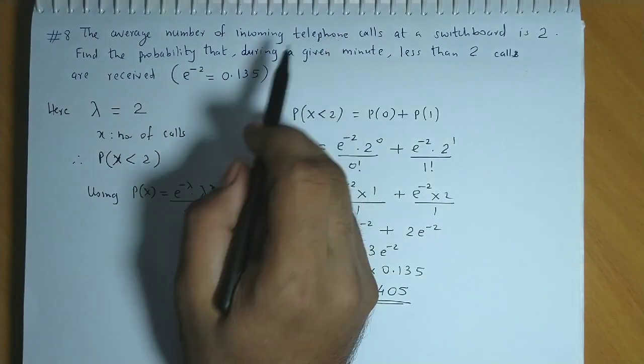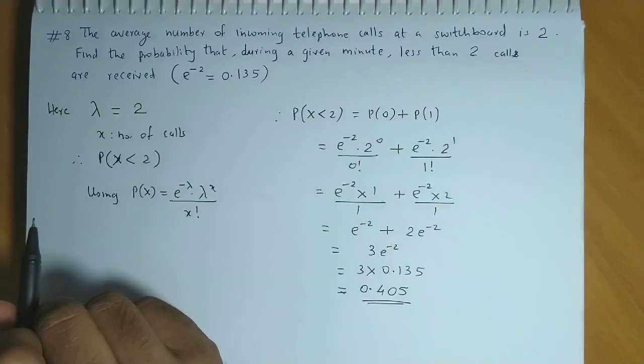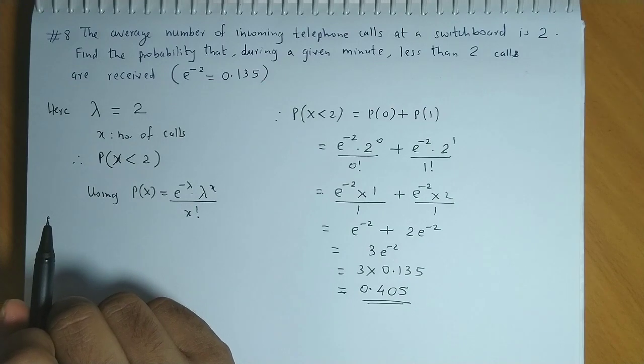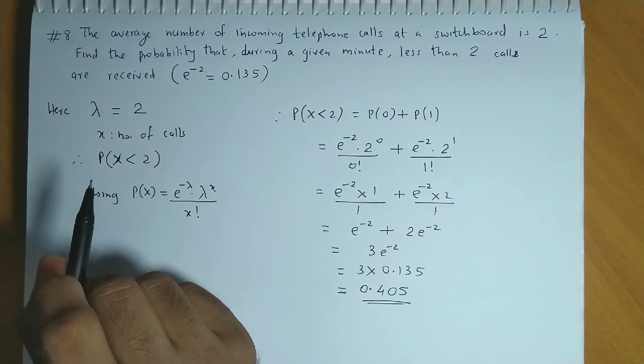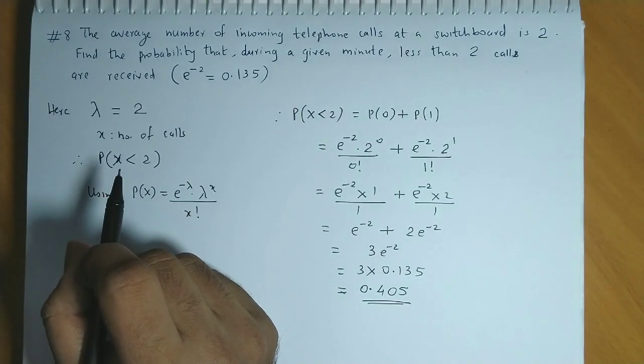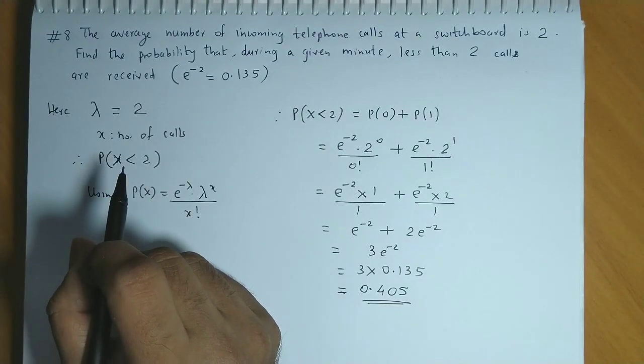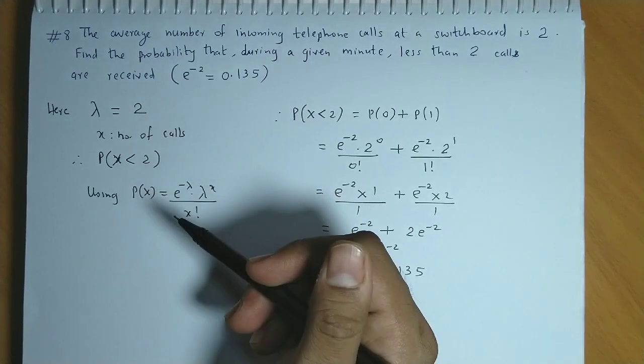So remember, incoming telephone calls is a discrete random variable. And there is no definite count. Many calls can come. So here we cannot put any restriction on the number of trials. So this is a case of Poisson distribution.